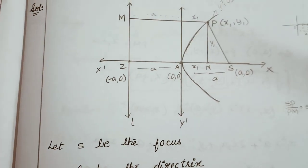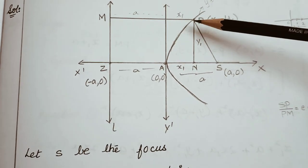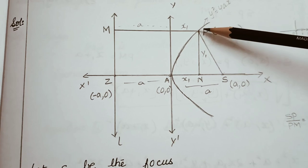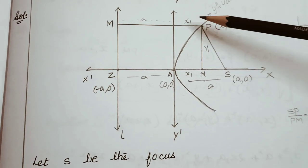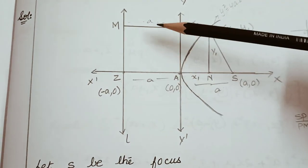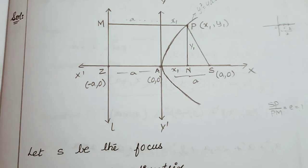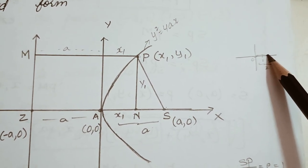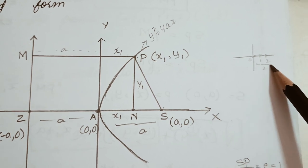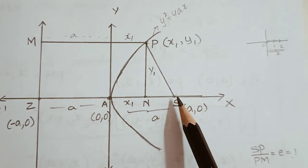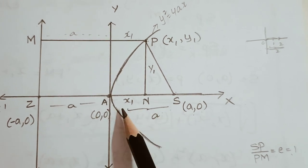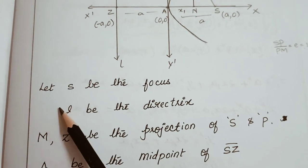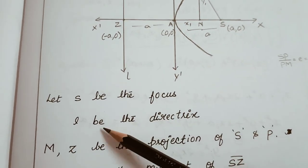Now take a point P at (x1, y1) on the parabola. From the origin to P horizontally it is x1, and the distance from the origin to the focus S(a,0) is a. For example, if we take 2 on the x-axis, from 0 to 2 the distance is 2; similarly from 0 to (a,0) the distance is a. So S is the focus at (a,0).